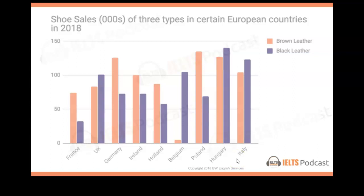I have to see what you wrote for your overview — I don't quite remember. I would probably say that Hungary sold the highest number of shoes of any of the countries, and Belgium sold the least, whereas it appears that brown leather shoes were popular in more countries than black. I'd probably do something like that.